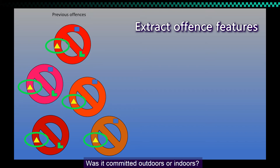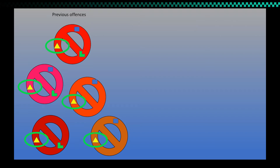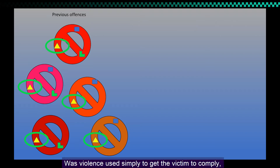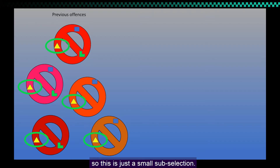Was it committed outdoors or indoors? Was it committed by a stranger or someone known to the victim? Was violence used simply to get the victim to comply, or was it used because the offender really wanted to be that violent? There are many other potential offense features, so this is just a small sub-selection.